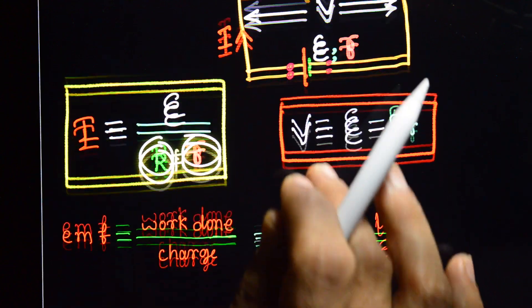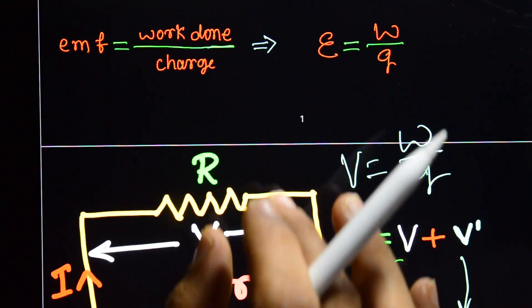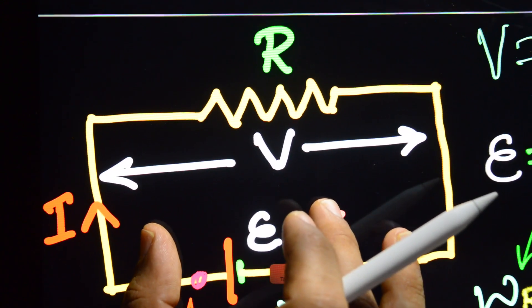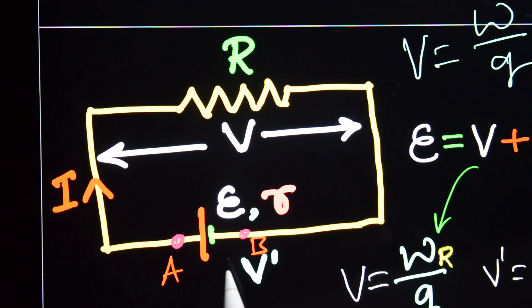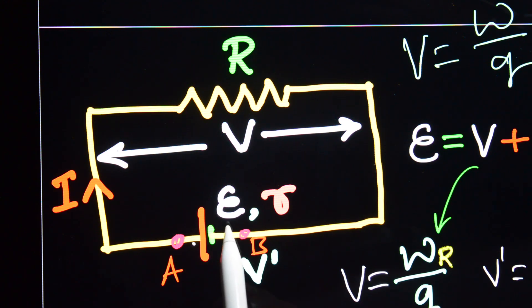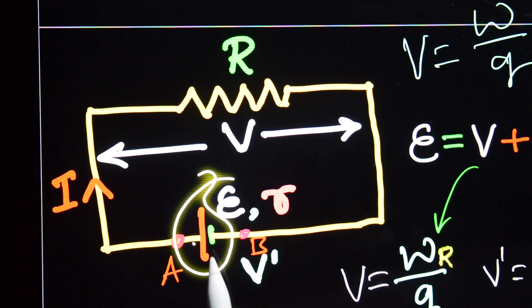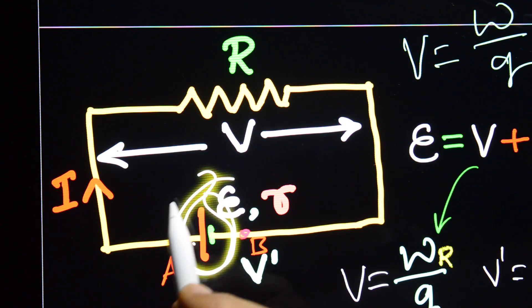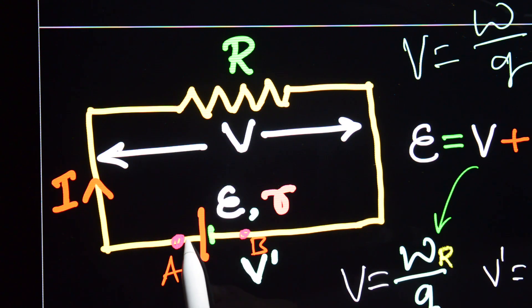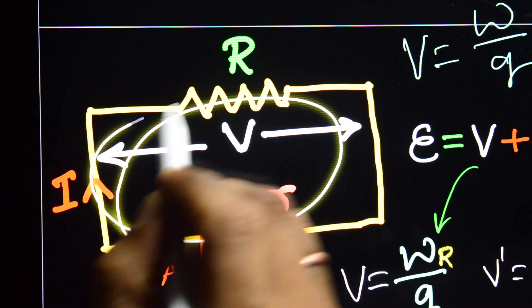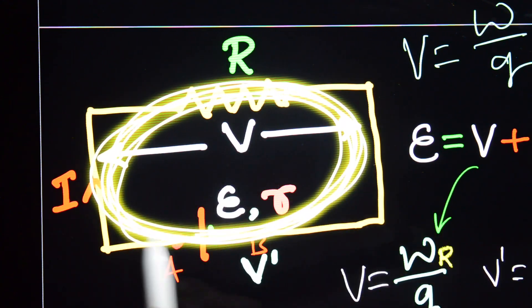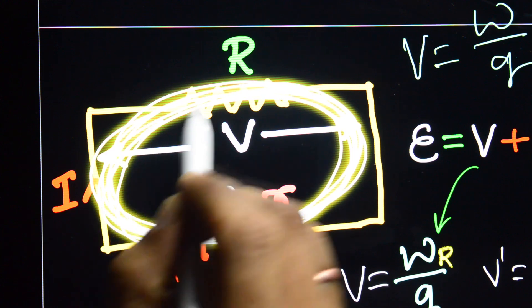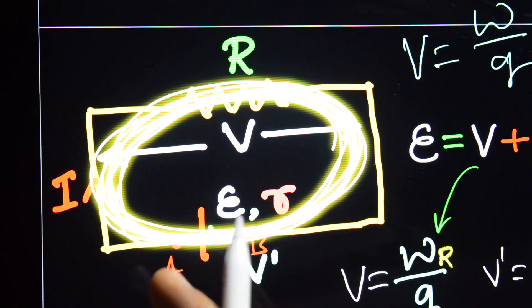First, we have to look at EMF — we have to define EMF. Work done by the cell to drive a unit positive charge throughout the circuit.